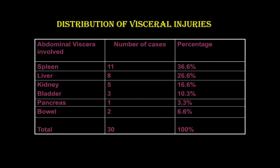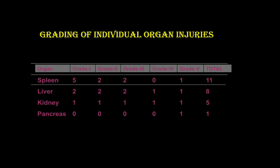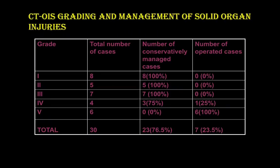The spleen was the most commonly injured organ, followed by the liver; the least injury was seen in the pancreas. For individual organ grading, Grade 1 was the most common, seen in around 8 cases; Grade 2 in 5 cases; Grade 4 was the least common. Grade 1, 2, and 3 cases were almost all managed conservatively, while Grade 4 and 5 were managed operatively. Among the total 30 solid organ injury cases, around 80% were managed conservatively and 20% operatively.